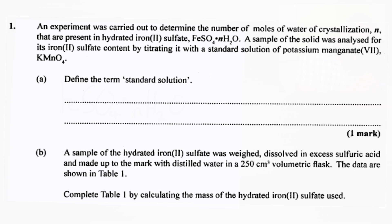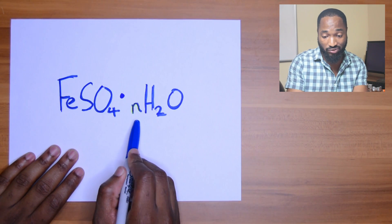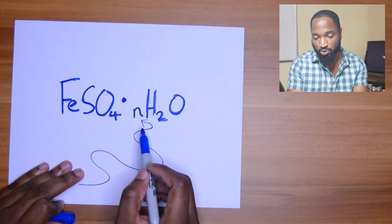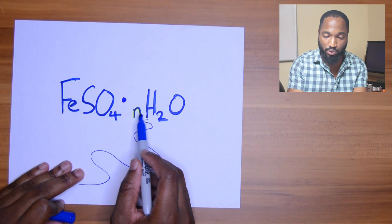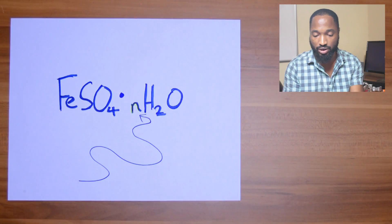So the question reads: an experiment was carried out to determine the number of moles of water of crystallization present in hydrated iron sulfate FeSO4·nH2O. A sample of the solid was analyzed for its iron sulfate content by titrating it with a standard solution of potassium manganate KMnO4. Define the term 'standard solution.' Anytime you're doing water of crystallization, they normally want you to find out the number of moles of water for every mole of whatever compound it is.